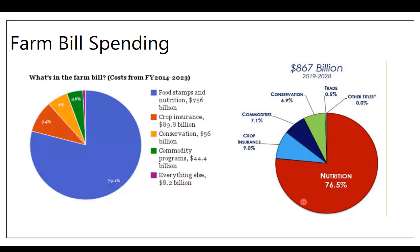That drop is almost entirely due to one thing: economic conditions improving. This 80 percent spending is based on an entitlement — if you qualify, you get the benefit. As unemployment drops and the economy expands, fewer people qualify, and that's what you see here. Between 2014 and 2018 there were almost no changes in the programs; people fell out of nutrition assistance roles through improved income, and a smaller piece through some changes to eligibility — we'll save that for our discussion time at the end of this module.